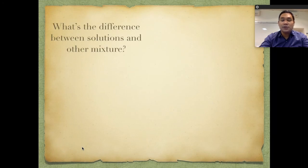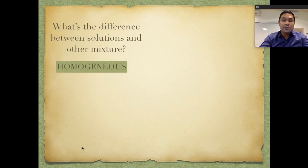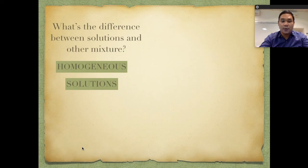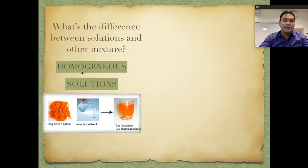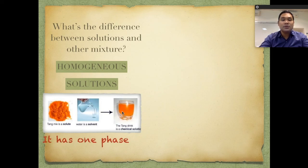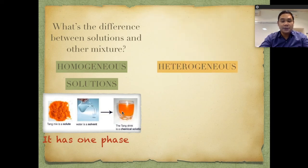What's the difference between solutions and other mixtures? There are different types of mixture. First, we have homogeneous mixture, and under homogeneous mixture we have solution. From the word itself, homogeneous — 'homo' means one and 'genus' means phase. For example, this Tang powder — the orange powder — we have water, and when we mix Tang and water we cannot distinguish which one is the orange powder and which one is the water. It has one phase, meaning one appearance.